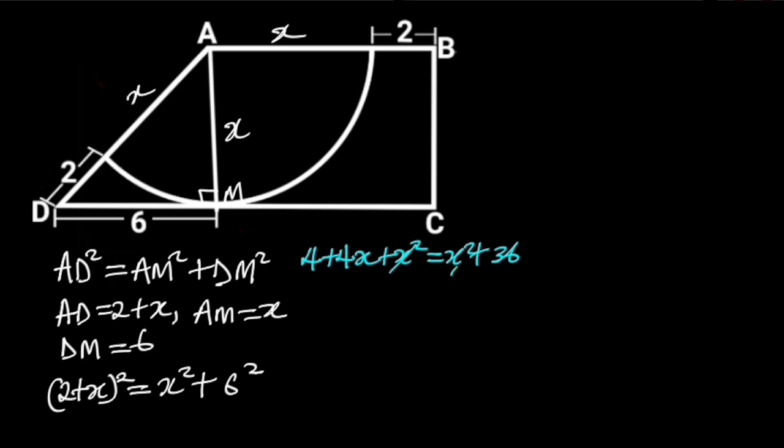X squared will cancel out, and we are left with 4 plus 4X is equal to 36. Collecting the like terms will give us 4X is equal to 36 minus 4. 36 minus 4 is 32, so we are left with 4X is equal to 32. Dividing through by 4 will give us X equals 8.